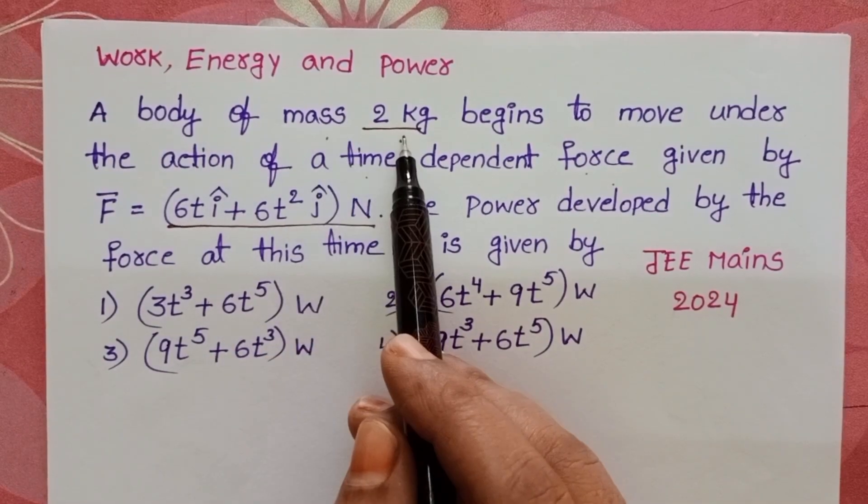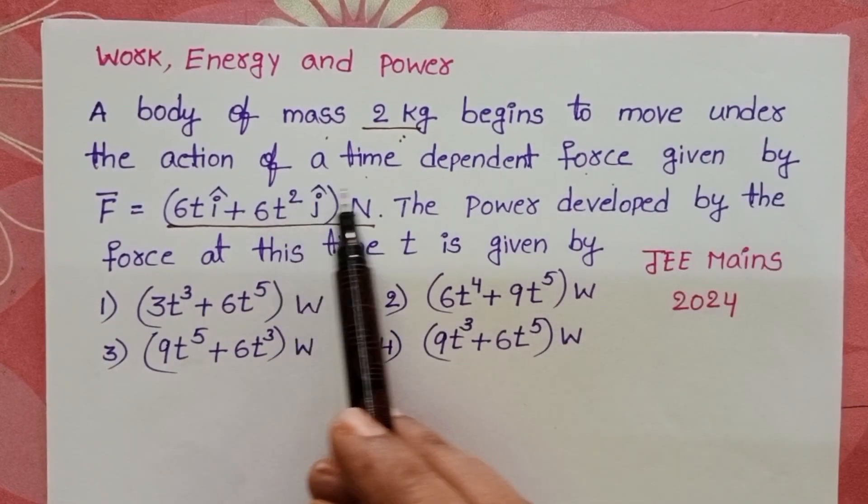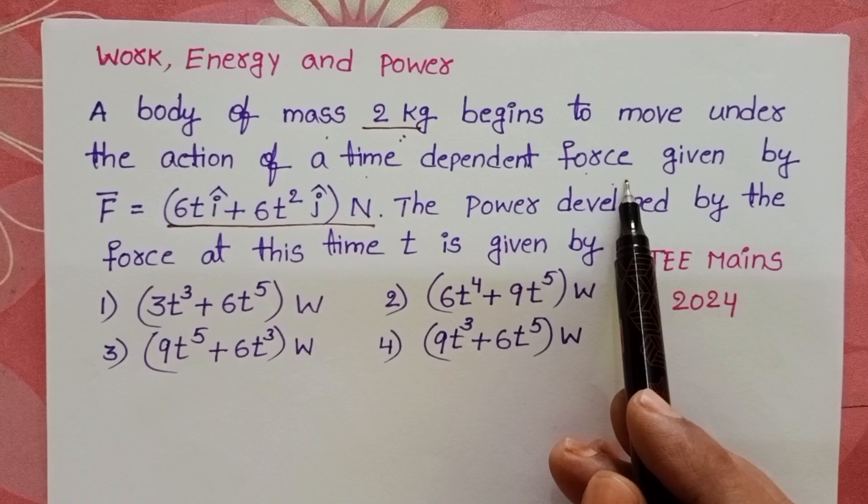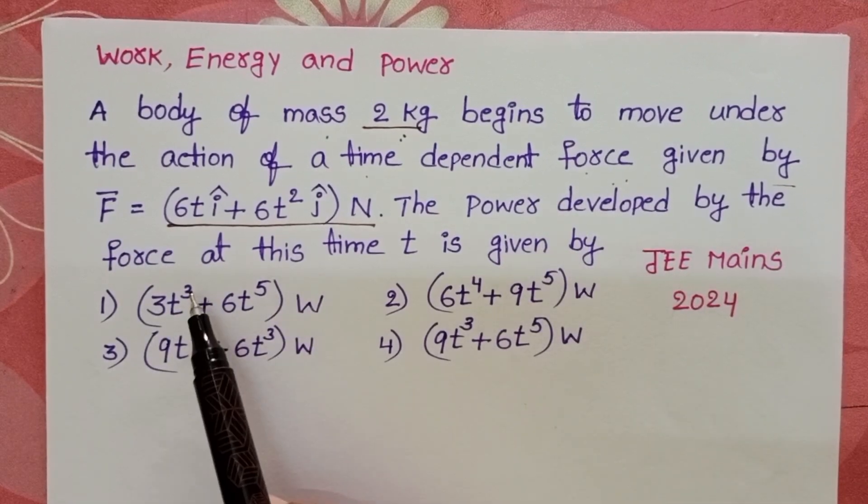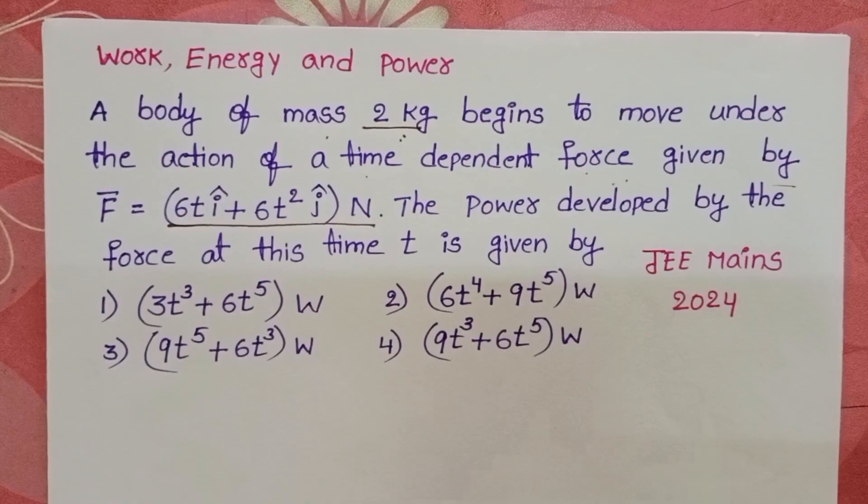A body of mass 2 kg begins to move under the action of a time-dependent force given by F bar. The power developed by the force at this time t is given by.